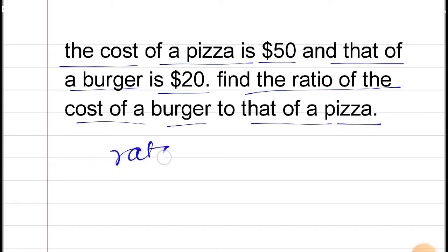We need to find the ratio. Ratio is basically a fraction, and since it's asking us to find the ratio of the cost of burger to that of a pizza, the first term is the cost of the burger.